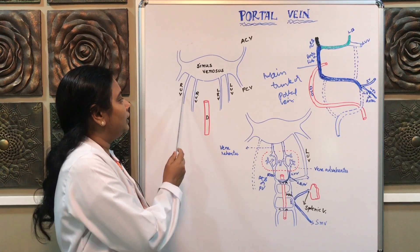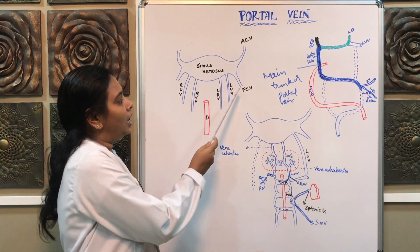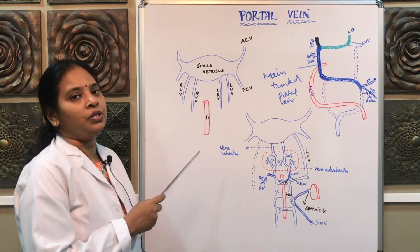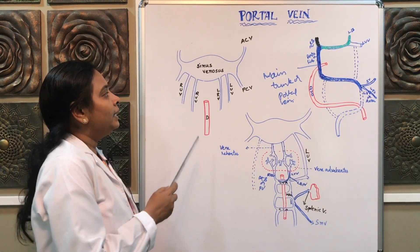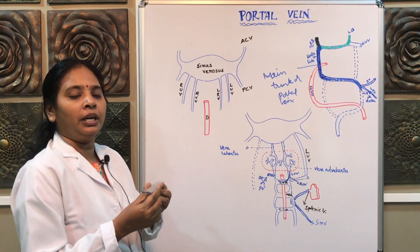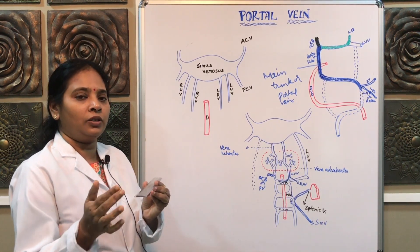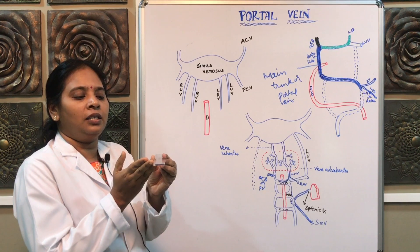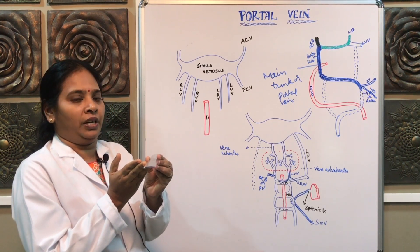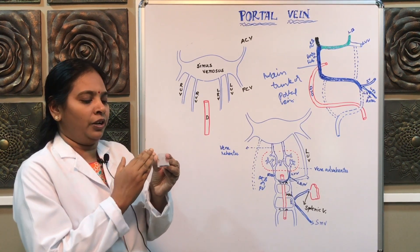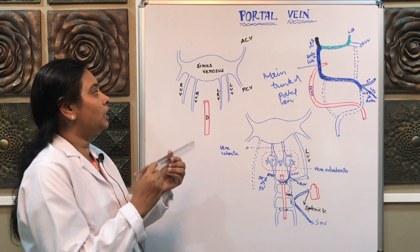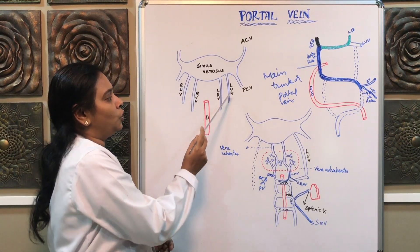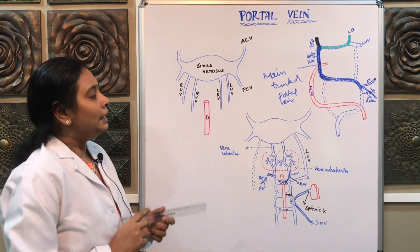Next, another set of veins are called cardinal veins. Cardinal veins are the veins which drain the body wall. In the developing embryo, the vein draining the anterior part is the anterior cardinal vein, the posterior part by the posterior cardinal vein. Both veins join to form the common cardinal vein, which enters into the sinus venosus. So the entire sinus venosus receives three sets of veins.